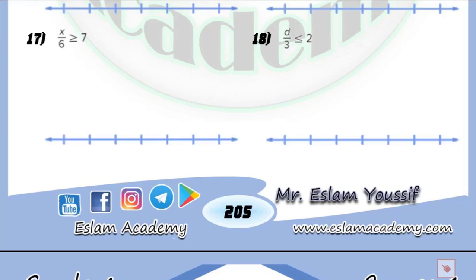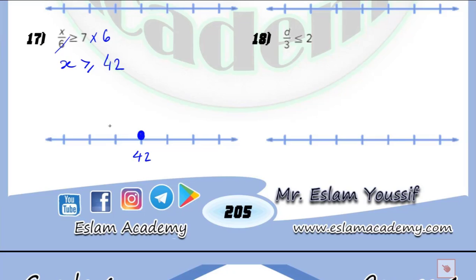In question 17, we have x over 6 more than or equal to 7. Over 6 means divided by 6. We use the inverse operation, which is multiplication, so I will multiply by 6. Because we are multiplying by a positive number, there is no change to the inequality sign. So x is more than or equal to 7 multiplied by 6, which equals 42. It is a closed circle and we shade the part at the right.